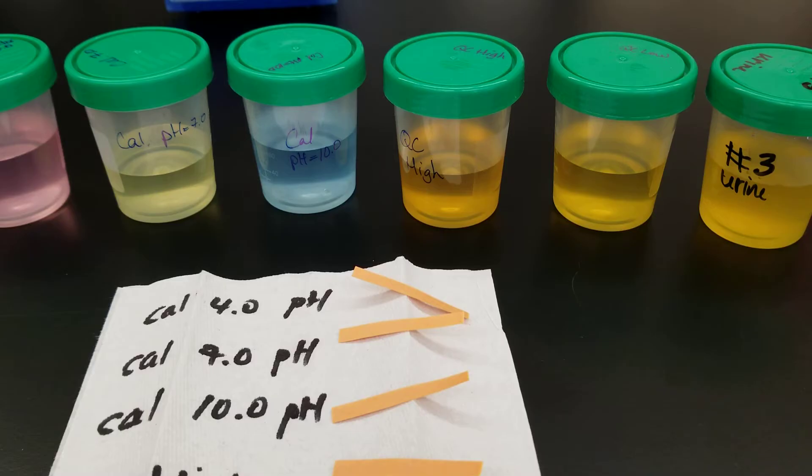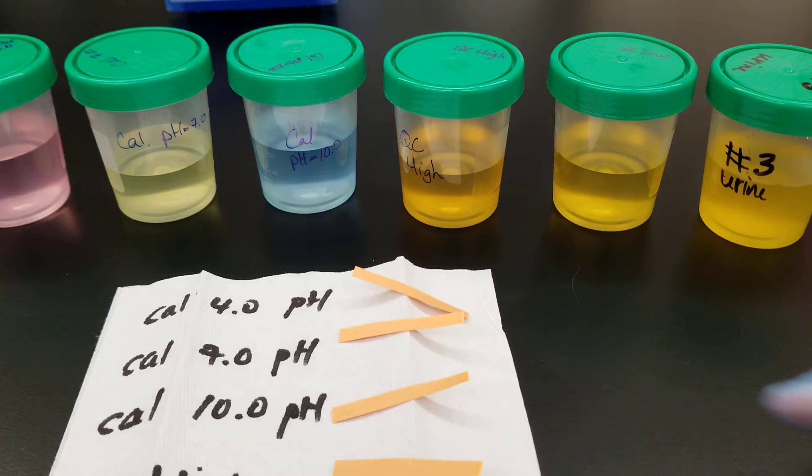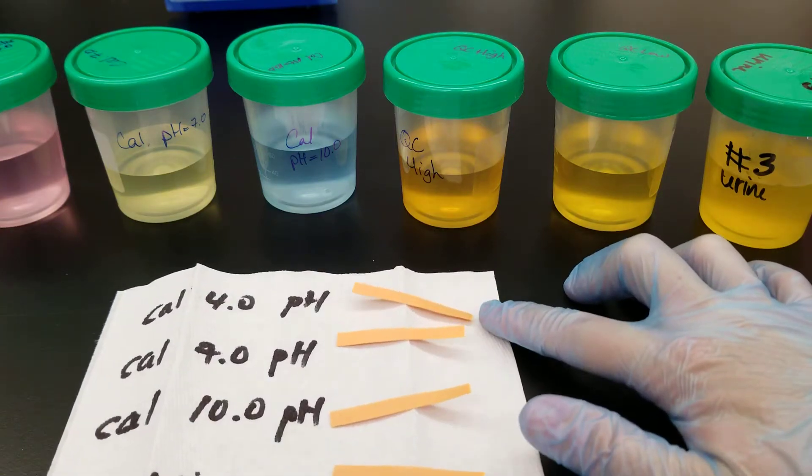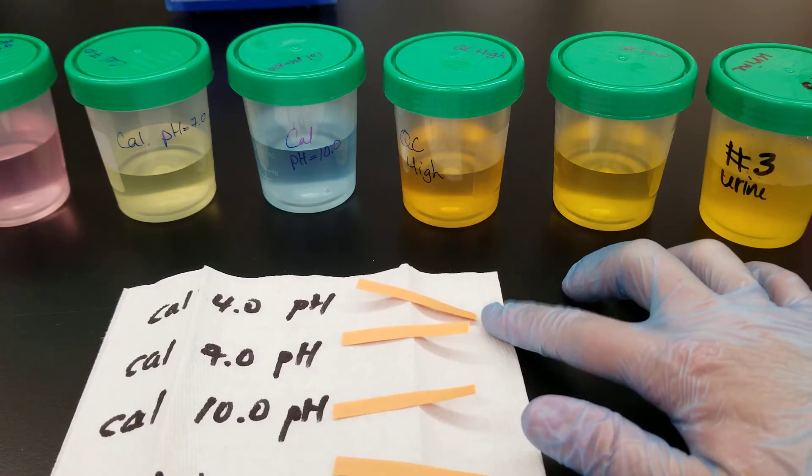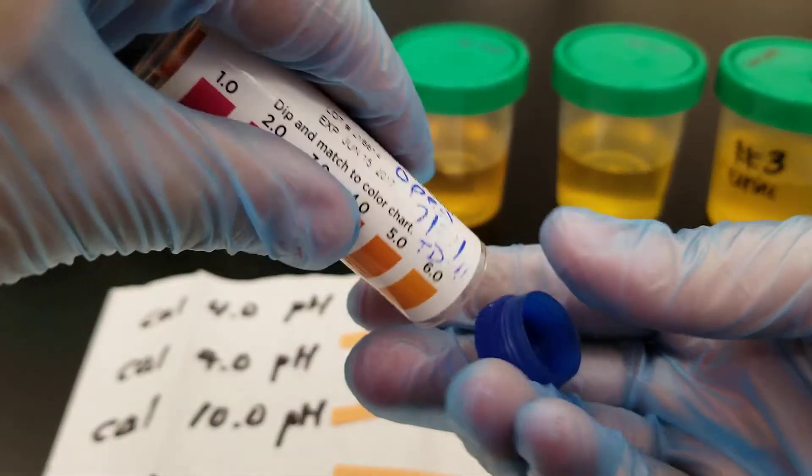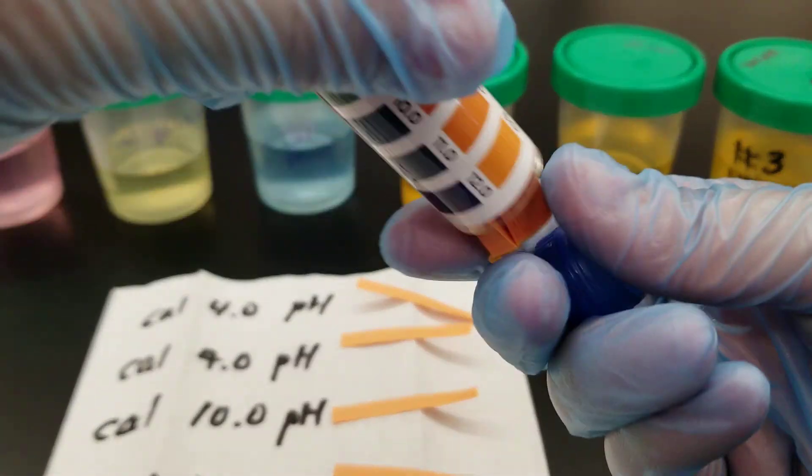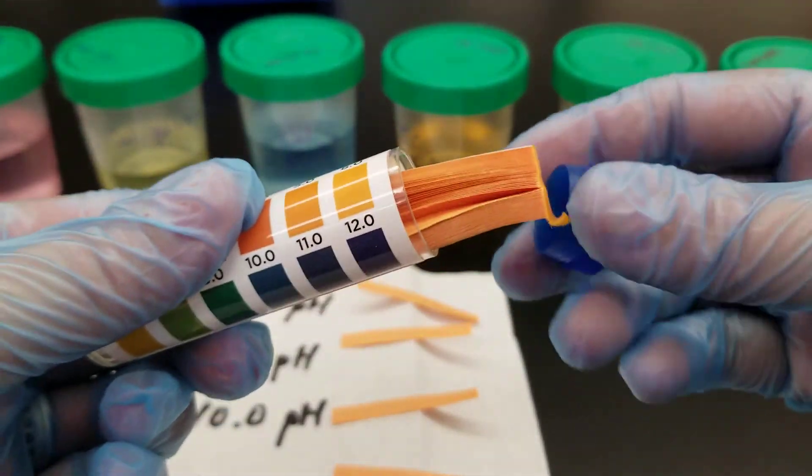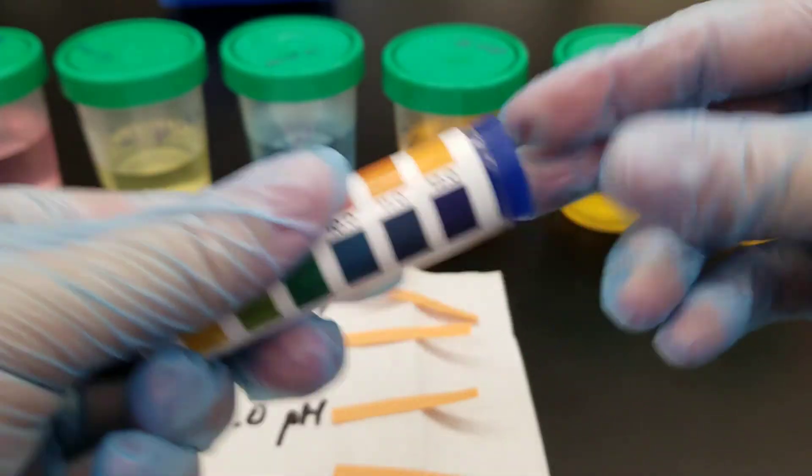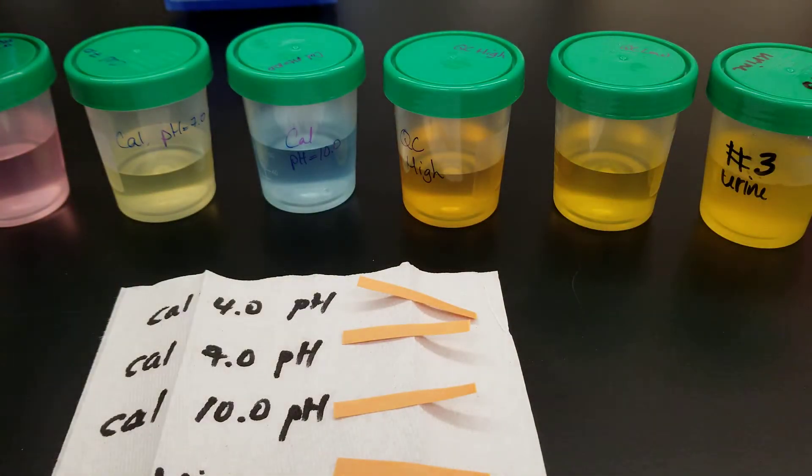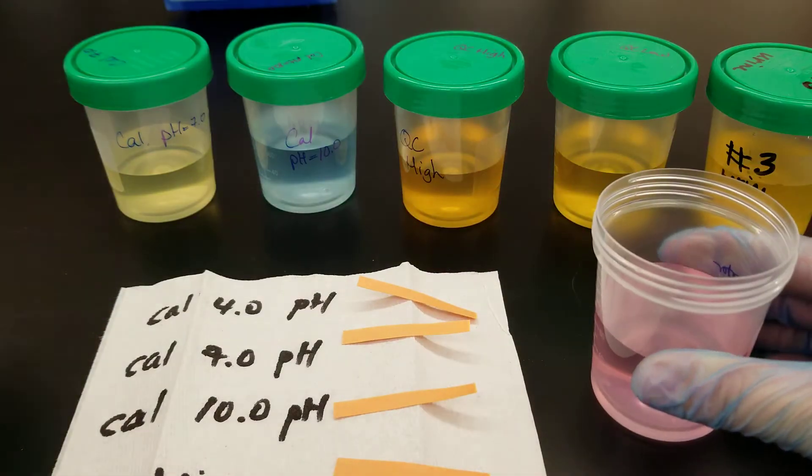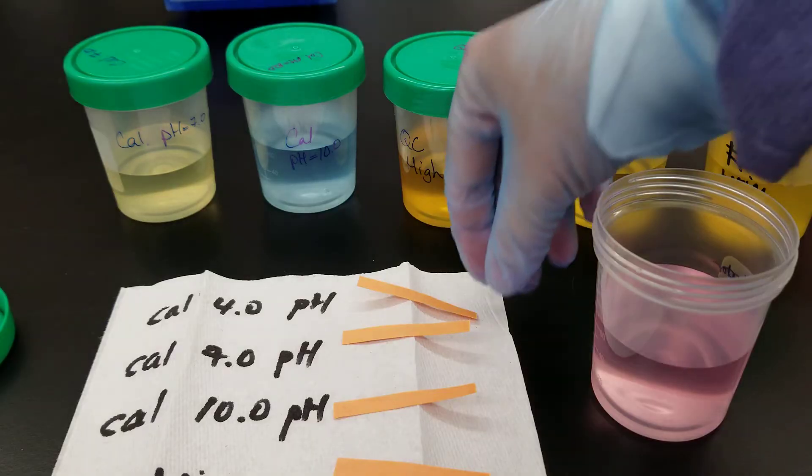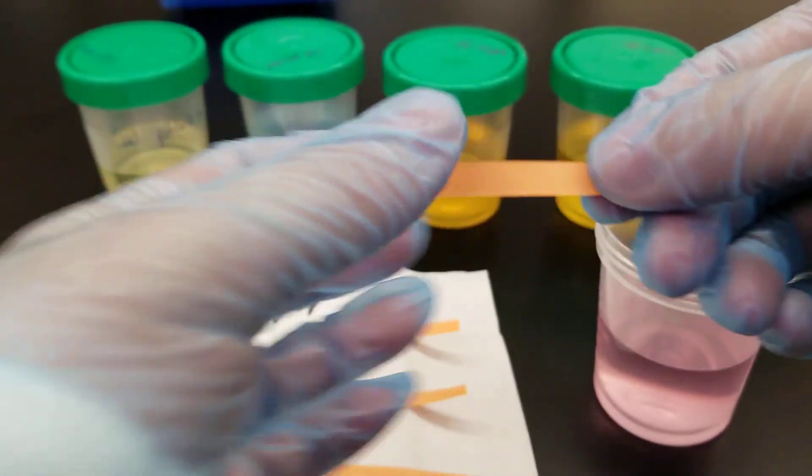We're going to use the pH paper in the calibrators first. I'm right-handed, so I put the side that came off the sticky glue part. I don't want the glue tape to interfere with my measurements, so I'm going to hold that side and dip the other. The first one we're going to do is the pH 4, that's the pink one. You're gonna hold the side with the glue.